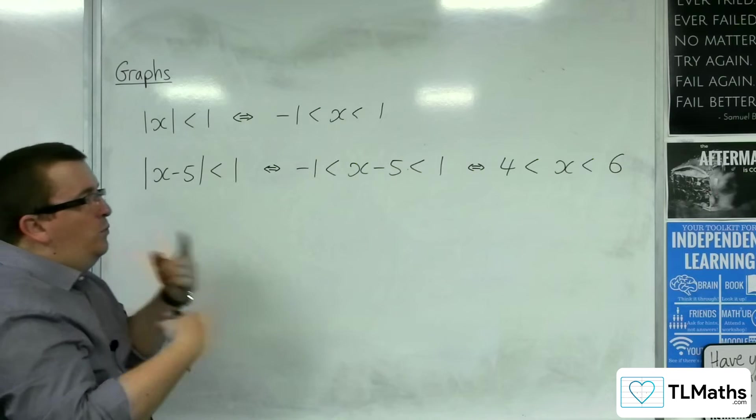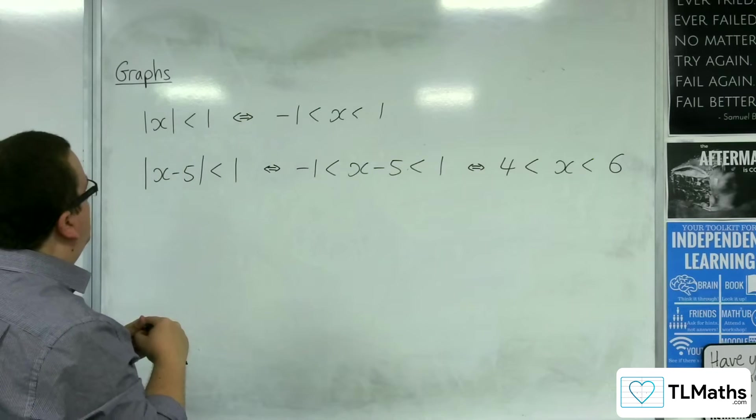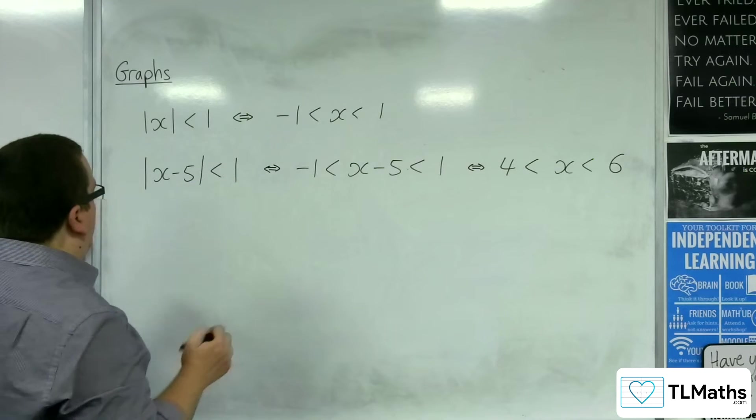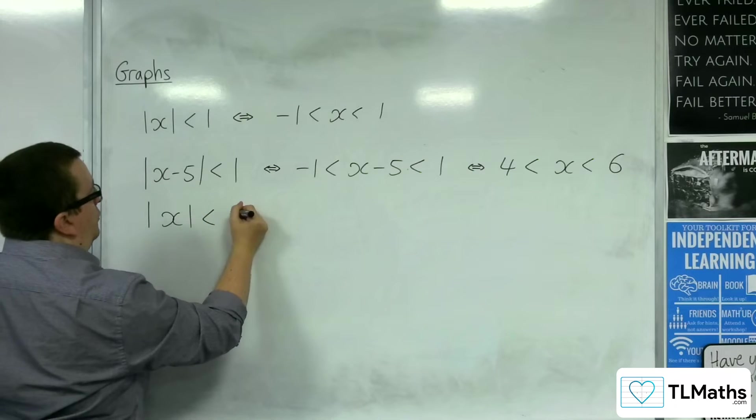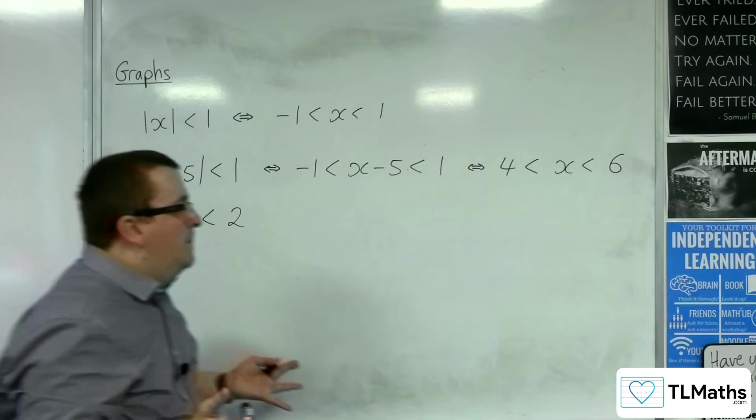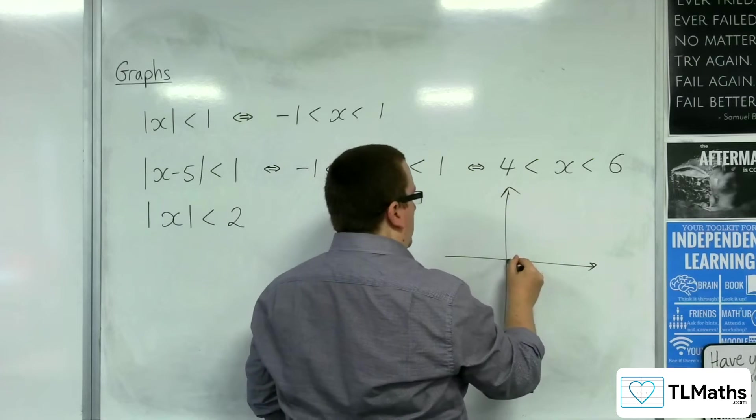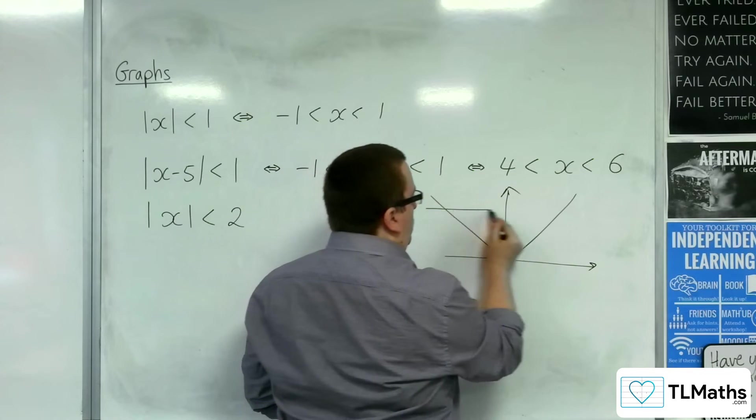So, can we generalise this? Let's say I change this number here instead. So, let's say I changed it to mod x is less than 2. How does that change things? Well, on my diagram, I'm now looking at mod x and y equals 2.